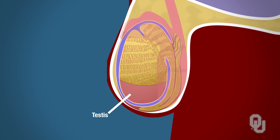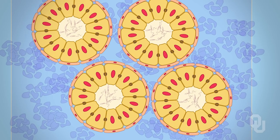Notice that the majority of the testicle is composed of seminiferous tubules. These tubules produce sperm via spermatogenesis. In order to understand how, we need to zoom in on the seminiferous tubule and take a cross section through the tubule.